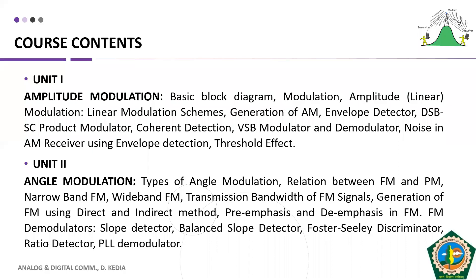Unit one and unit two are dedicated to analog communication. Angle modulation comprises two things: FM, that is frequency modulation, and phase modulation. So AM, FM, and PM — these are what we have in units one and two, covering the analog communication part.